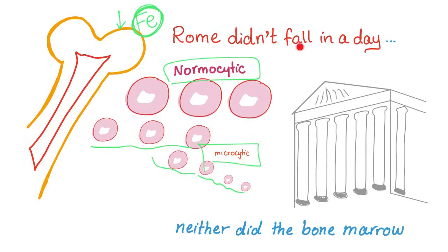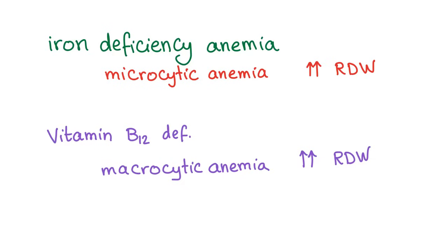Rome did not fall in a day, and neither did the bone marrow — it happens gradually. So in iron deficiency anemia, we have microcytic anemia with increased RDW. In vitamin B12 deficiency, you will have macrocytic anemia, again with increased RDW.